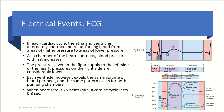As a chamber of the heart contracts, the blood pressure within it is going to increase. The pressures given in the figure are in millimeters of mercury, and these are the measurements for the left side of the heart — the pressures of the right side are much lower. Each ventricle expels about the same volume of blood per beat. When the heart rate is about 75 beats per minute, one cardiac cycle lasts about 0.8 seconds.